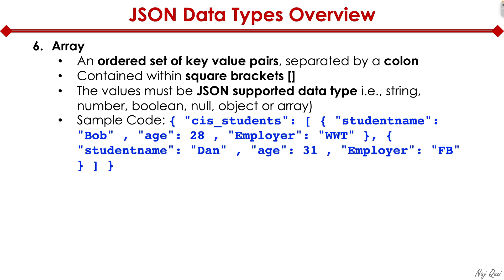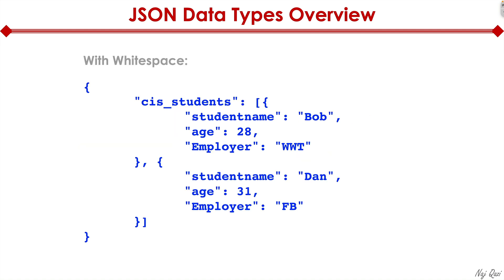A sample code could be CIS students or computer information systems students. Here I'm showing student name Bob, age 28, employer is WWT. Then comma, another student named Dan, age 31, employer Facebook. Now let me add some white space to this code to make it easier for you to understand. Look, here we are starting at CIS students. And then we have a colon. And then check this out, we have a square bracket, followed by a curly bracket. And then we have the first student, Bob, age 28, employer WWT.